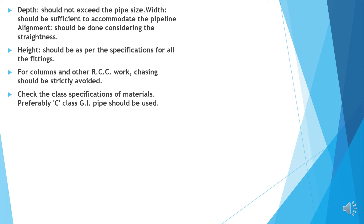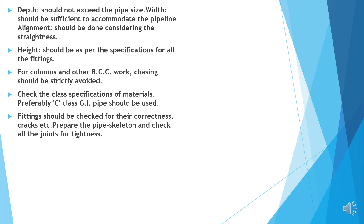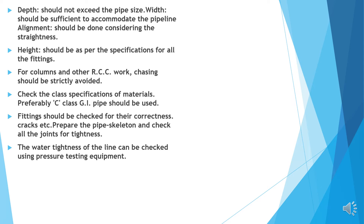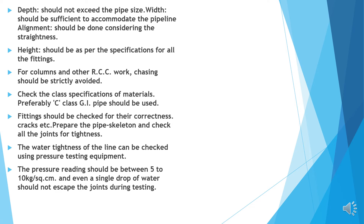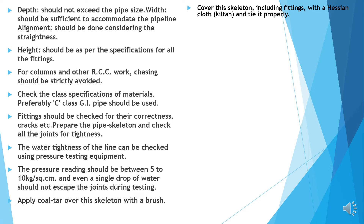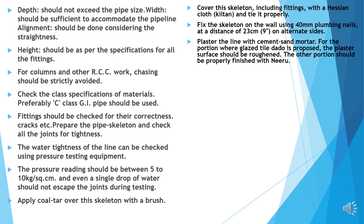Check the class and specification of the material — preferably C class GI pipes should be used. Fittings should be checked for correctness, cracks, etc. Prepare the pipe skeleton and check all joints for tightness. The water tightness of the line can be checked using pressure testing equipment. The pressure reading should be between 5 to 10 kg per cm². Not even a single drop of water should escape the joints during testing. Apply coal tar over the skeleton with a brush. Cover the skeleton including fittings with hessian cloth and tie it properly. Fix the skeleton on the wall using 40 mm plumbing nails at a distance of 9 inches on alternative sides. Plaster the line with cement and sand mortar, roughening the surface where glass tile dado is prepared. Curing should be done for at least 7 days.